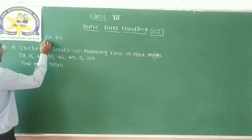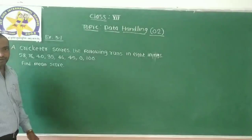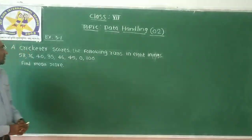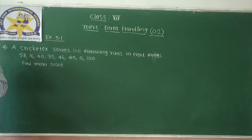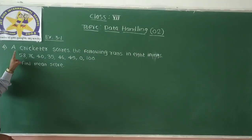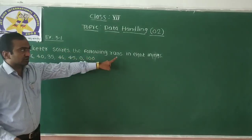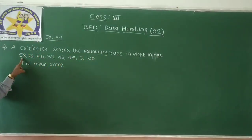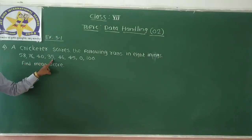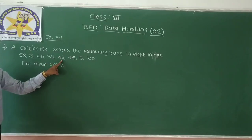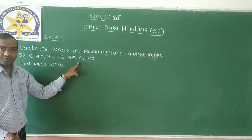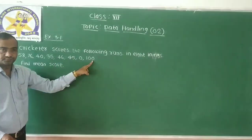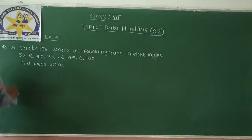We are continuing with exercise number 3.20, question number 4. A cricketer scored the following numbers in 8 innings: 58, 76, 40, 35, 46, 45, 0, and 100. We have to find the mean score.